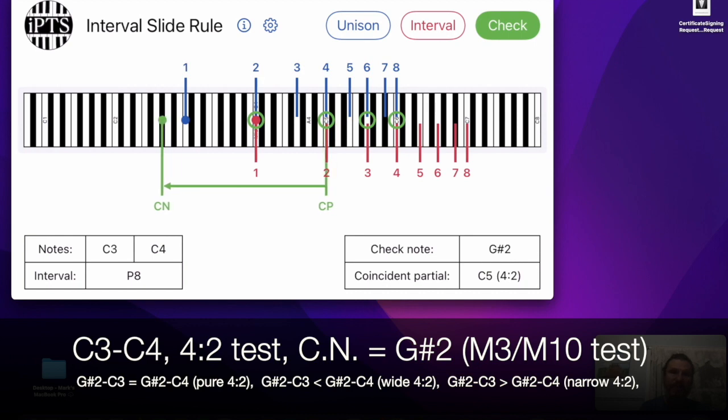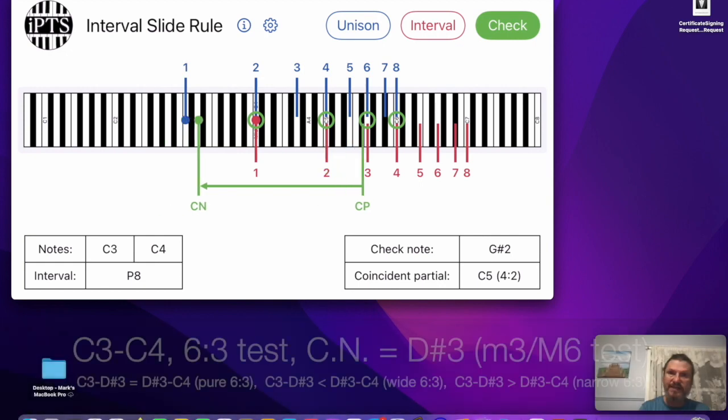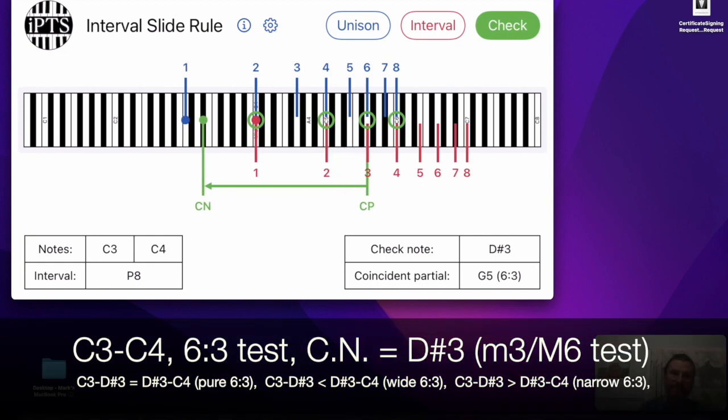For example, if you wanted to test the 4-2, you would use the G sharp. That's the major 3rd, major 10th test. If you wanted to test the 6-3, now you go up a minor 3rd from C to D sharp or E flat. Play the C, E flat, E flat, C. Compare the beat rates. If they're the same speed, it's a pure 6-3.